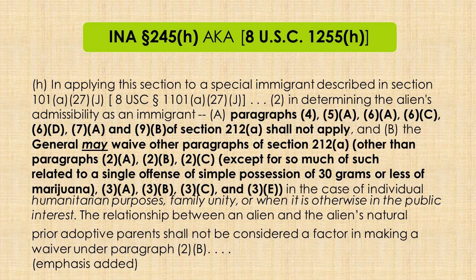INA 245H — SIJ has special rules regarding which grounds of inadmissibility apply, which are waivable, and which are not. These are laid out in INA 245H. Specifically, 245H governs adjustment of status just for SIJ grantees, so it does not affect one's ability to apply for SIJS — it's an issue at adjustment and not an issue that would preclude anyone from getting SIJS granted in the first place. The statute makes certain grounds inapplicable to SIJ grantees, certain things are waivable at the discretion of the adjudicator, and certain things are a bar to adjustment. Notably, you do not need to show extreme hardship for a waiver under INA 245H.